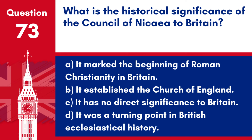Question 73. What is the historical significance of the Council of Nicaea to Britain? a. It marked the beginning of Roman Christianity in Britain. b. It established the Church of England. c. It has no direct significance to Britain. d. It was a turning point in British ecclesiastical history. Answer: c. The Council of Nicaea, held in 325 AD, was a pivotal moment in early Christian history establishing foundational doctrines, but it does not have direct significance to Britain's own religious or historical development.